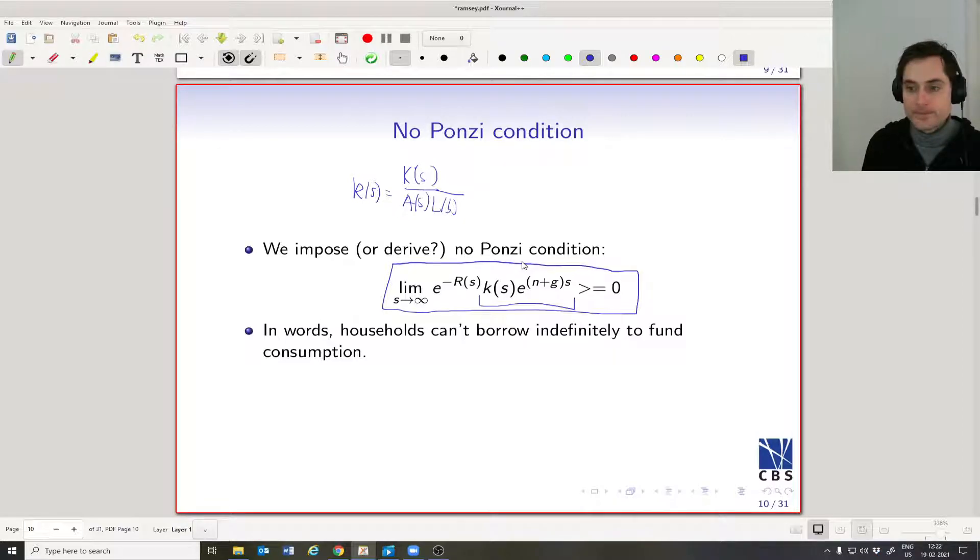Then here, we're going to discount the value of the savings to period zero. So what we're saying is, if I'm sitting at period zero and I'm thinking about what's happening at time s, that's the value of the capital at time s from the perspective of someone at time zero.